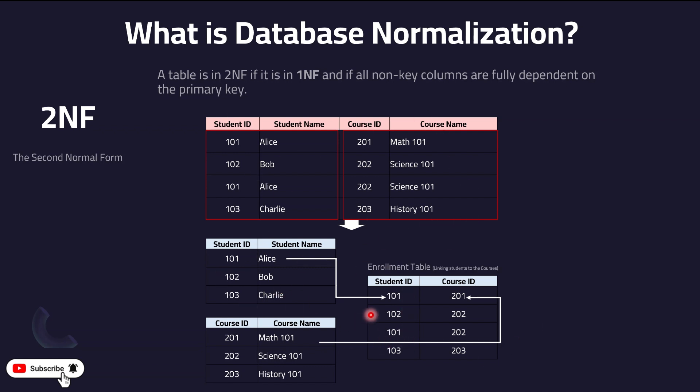The same logic applies to addresses — a customer might have two or three addresses, so we create a separate addresses table linked to the customer or student table. One customer can have many orders; one patient can have multiple visits to a doctor. That's where the one-to-many relationship comes in, and that's where the 2NF rule is applied.